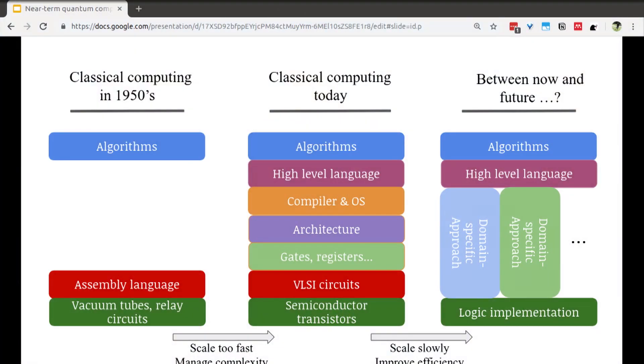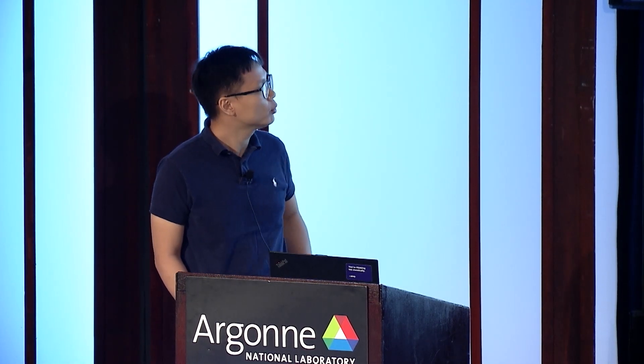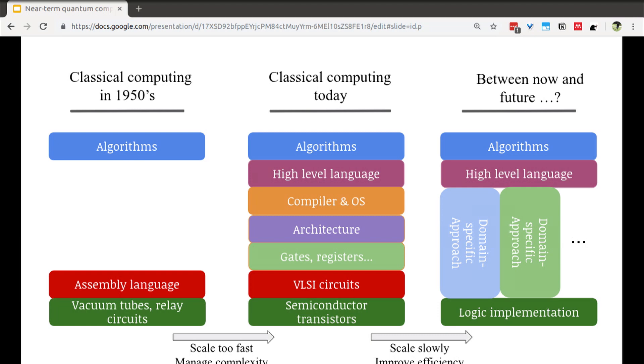Before we come to our topic, I want to give a very brief review of the history of classical computing. Classical computing actually starts from the 1950s. At that time, people knew what they wanted — to compute the trajectory of missiles — and they had physical implementations: relay circuits and vacuum tubes. However, what was in between was nothing. They directly input their algorithms into the physical implementation. Moving forward to now, we have this nicely layered approach between the algorithms and physical implementation.